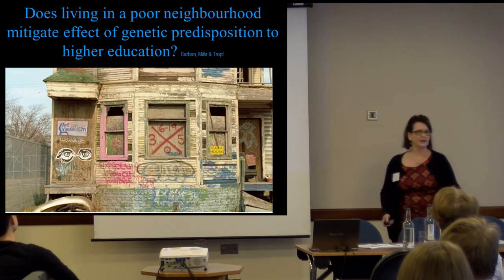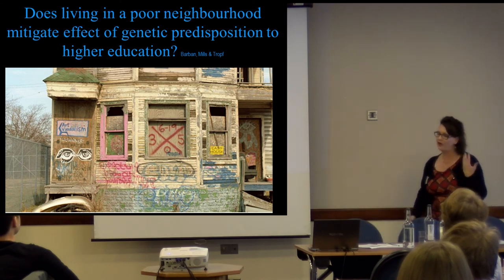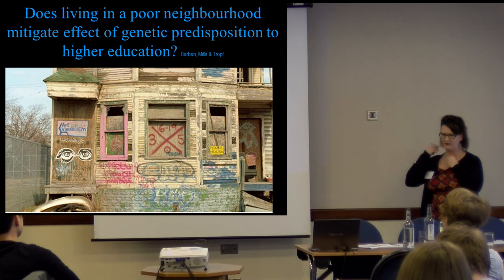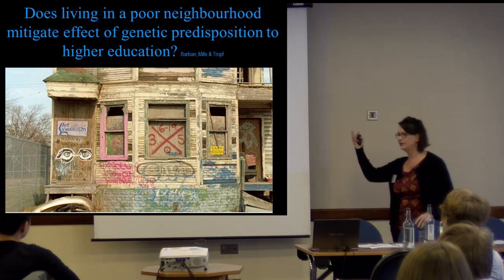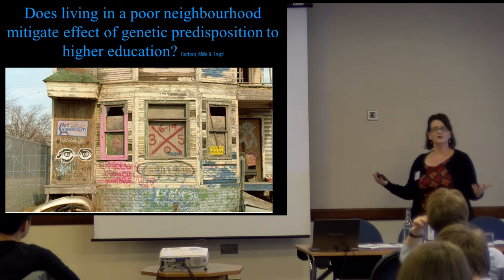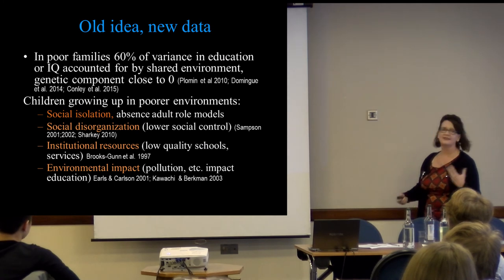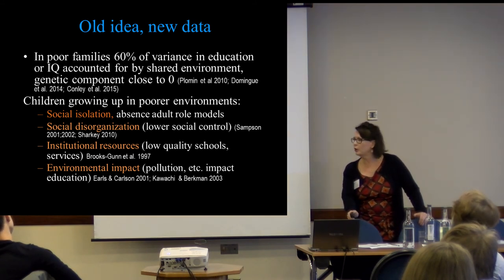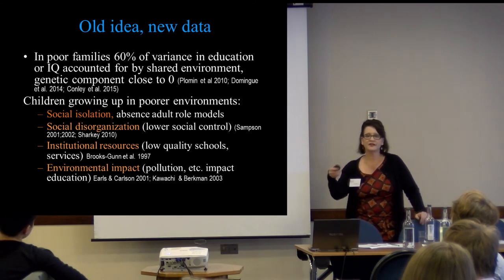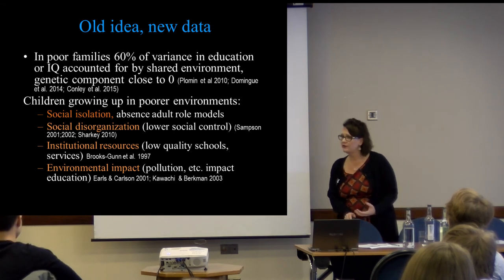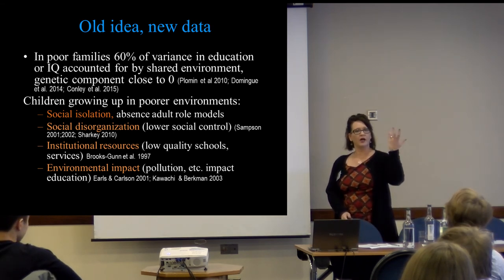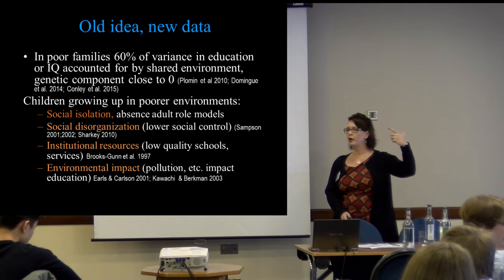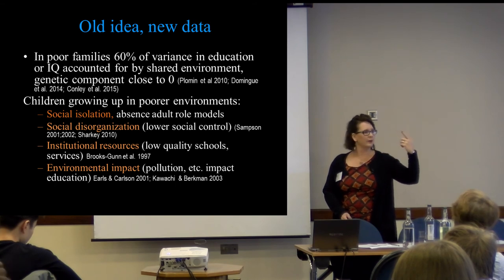Just to give you an example of gene-environment interaction — we often think about socioeconomic differences. We wanted to know: if you're living in a poor neighborhood but you have a really high genetic disposition for high education, does that influence you or not? This is actually an old idea. We know that in poor families, the genetic component in twin models was almost zero — this has been replicated for many things. If you come from a poor environment, you might have a high cognitive or genetic ability but that might not be realized.